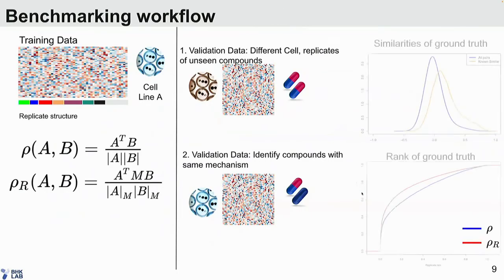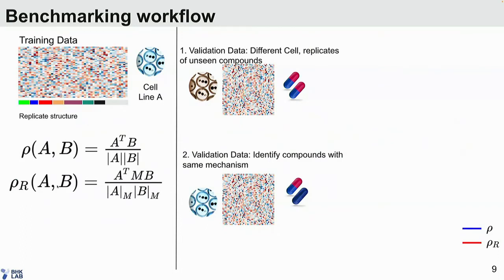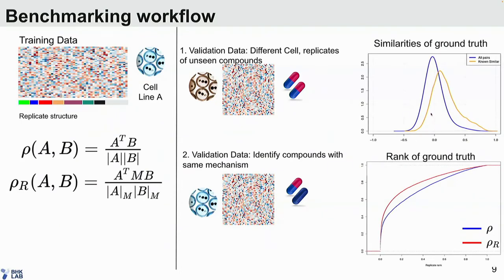Our benchmarking is as follows. We train a metric starting from some training data set which has replicate structures — we know that these columns are replicates, and so on. We can then apply it to two different benchmark data sets: first, to replicates of unseen compounds in unseen cells — data not seen in the training step. Then, for a more realistic case, we apply it to signatures of compounds that have the same mechanism of action but aren't necessarily replicates — for example, two EGFR inhibitors. We benchmark by looking at the similarities and ranks of our ground truth compared to all pairs, and compare two or more different metrics.